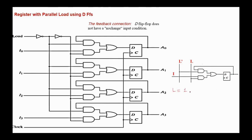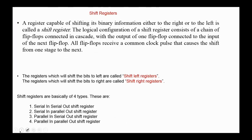When load equals one, we have one here and zero here. So the output of the first AND gate will be I, and here zero, giving us I at the D input. This means that the D flip-flop will accept the input I. From this single stage, it's now easy to understand how the whole register functions.